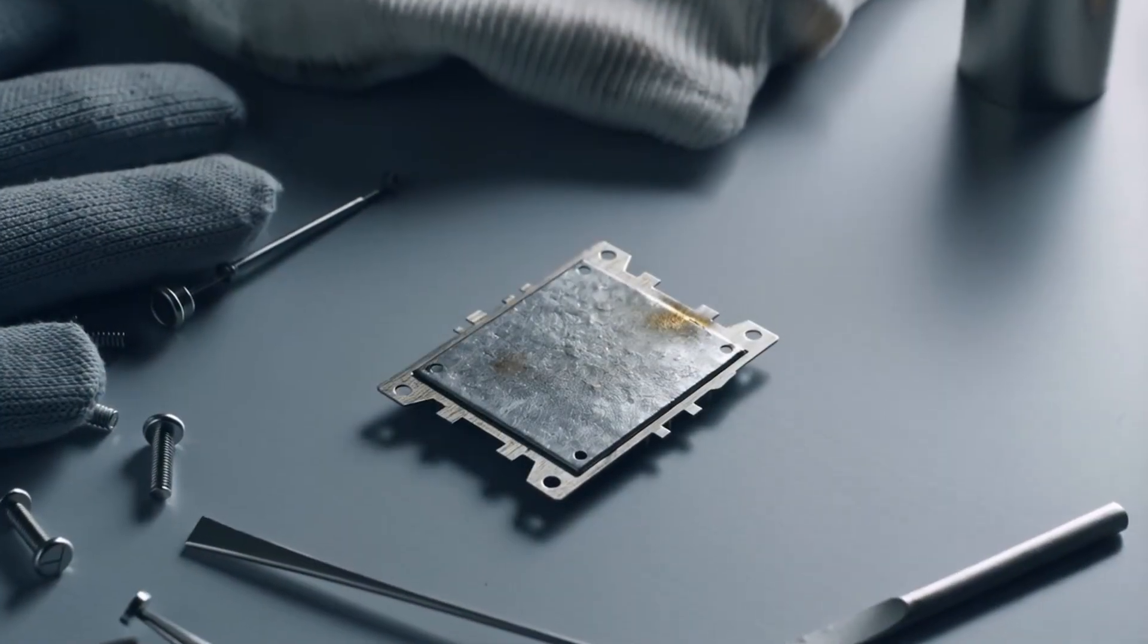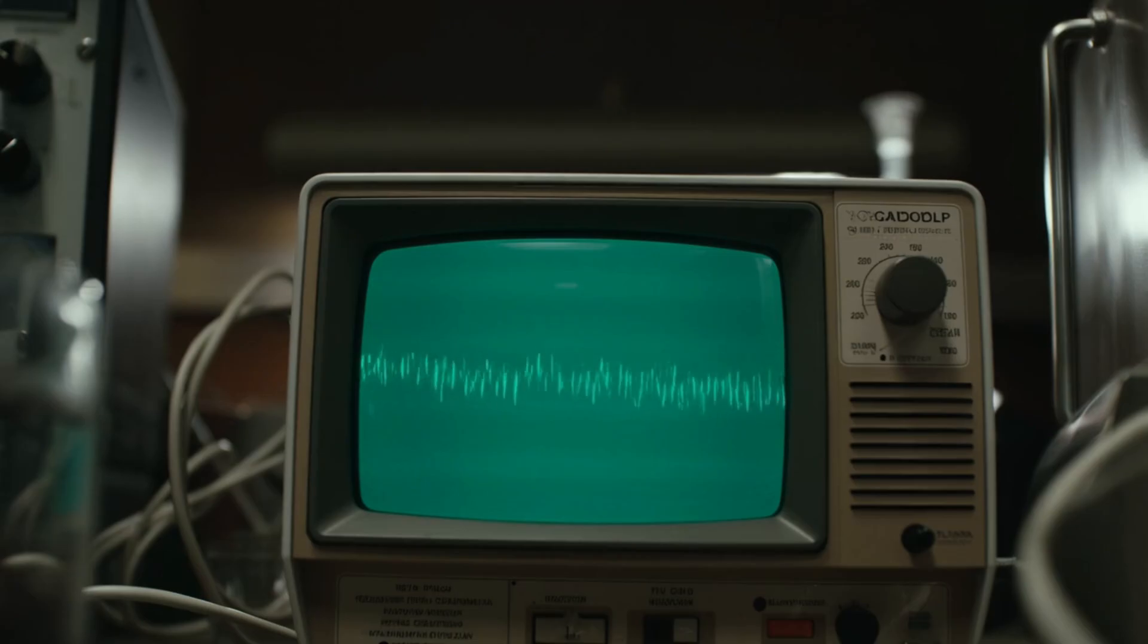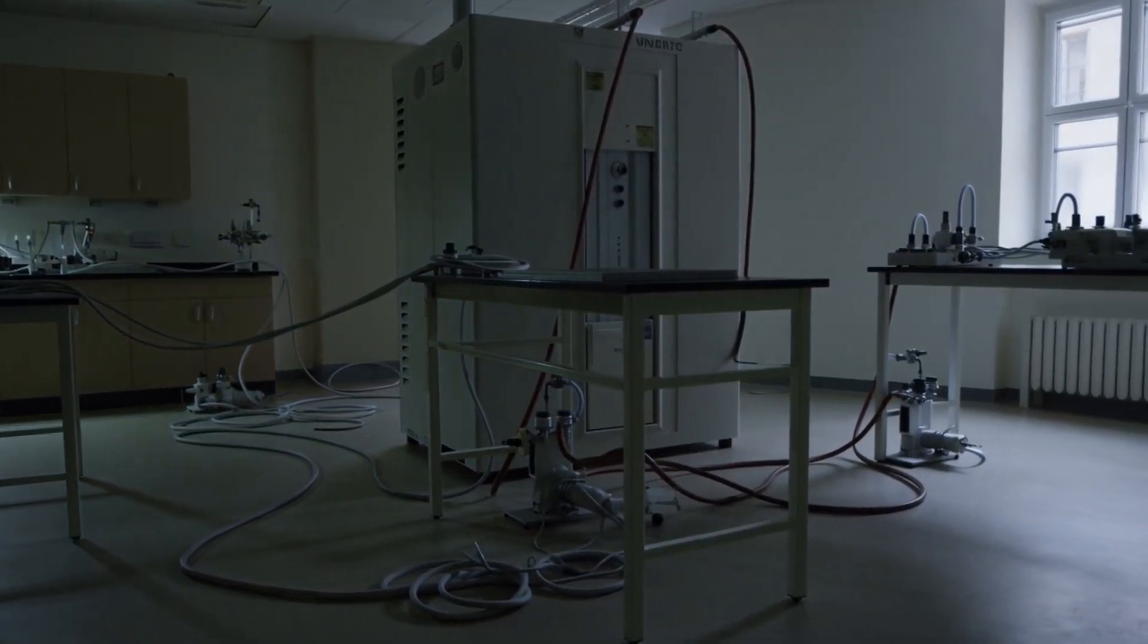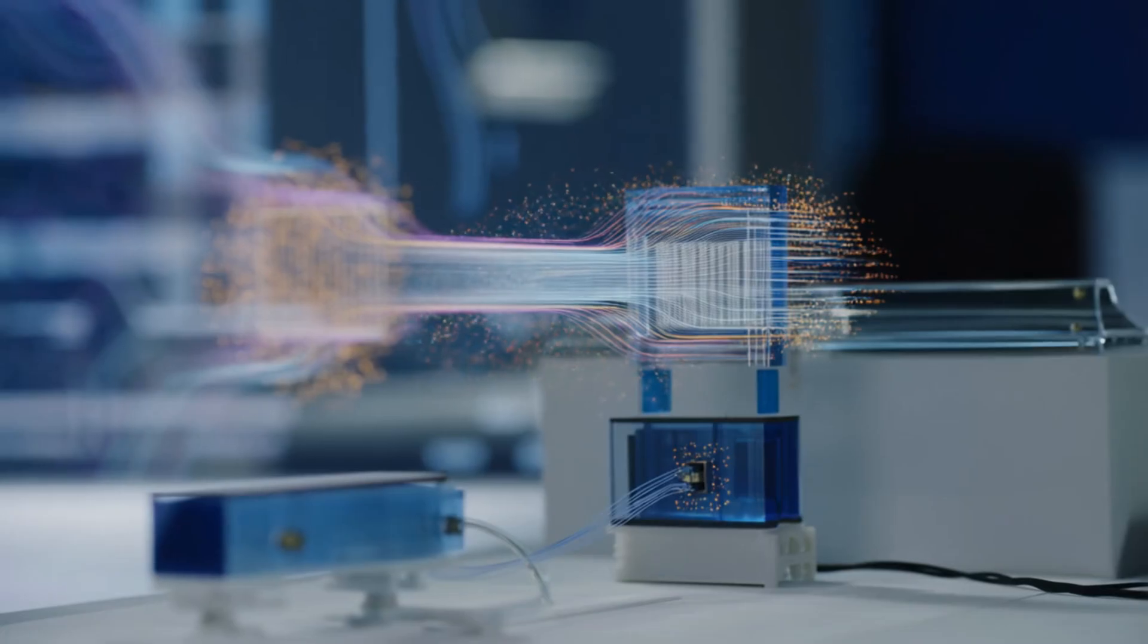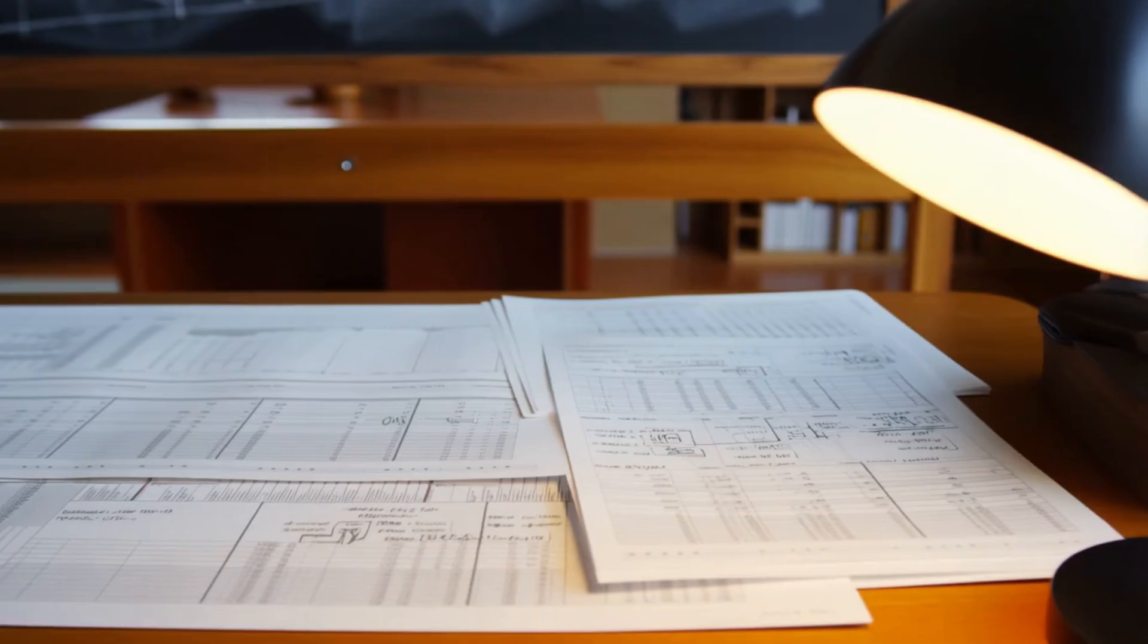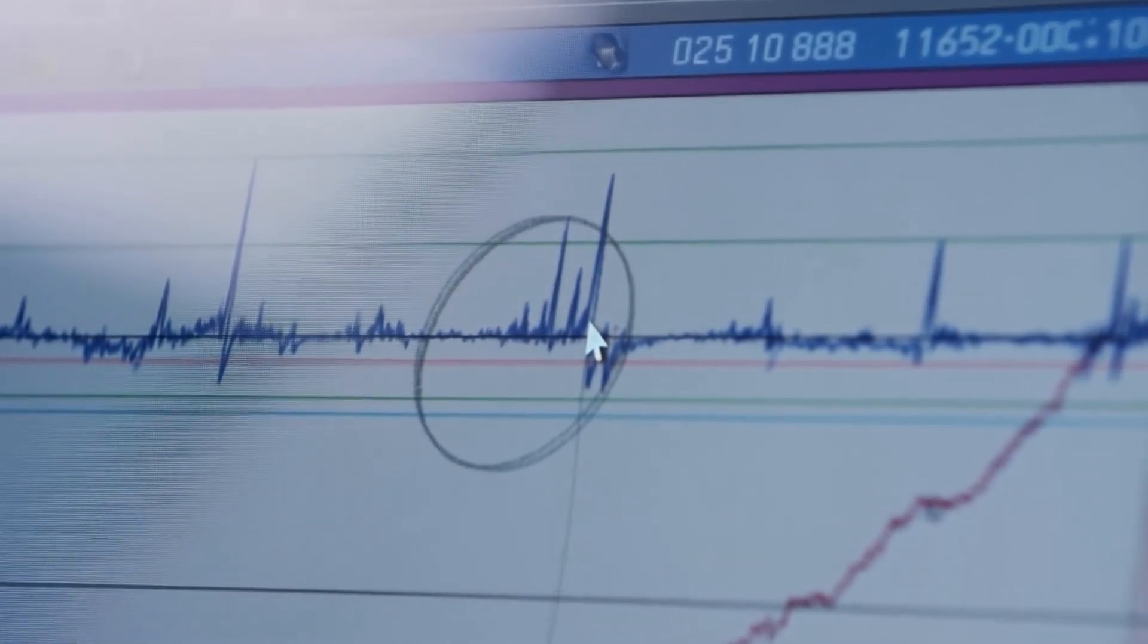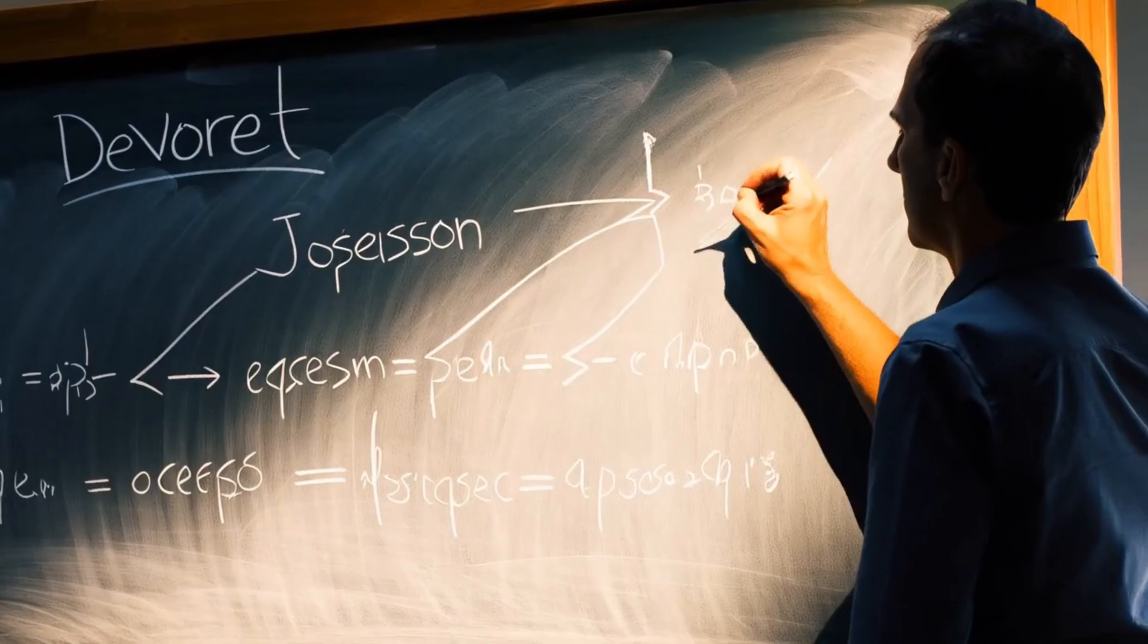The first major attempt has collapsed. The superconducting circuit, designed to reveal quantum tunneling and quantized energy levels, has yielded only instability and noise. For a moment, it seems as if the limits of technology have spoken, as if the experiment is exposing a boundary that cannot be crossed. But setbacks in science rarely signal the end. More often, they expose the hidden variables, the imperfections in fabrication, the stray sources of noise, the environmental disturbances that creep into even the most carefully shielded systems. In the aftermath of the failure, each scientist returns to the data, examining the traces that survived the collapse, searching for any indication of what went wrong and what might still be possible. The work is quiet now. More measured. More analytical. Not driven by anticipation, but by discipline.